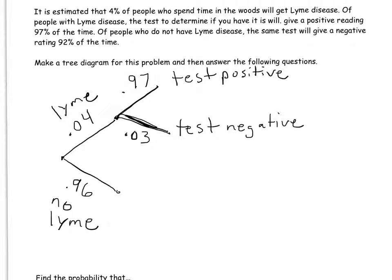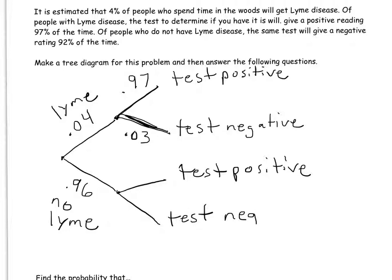Going down to the no-Lyme-disease branch, we split those people into test positive and test negative. So 92% of the time, if the person does not have Lyme disease, they're going to test negative — the test correctly identifies them as healthy. But 8% of the time we get a false positive, meaning the person really is healthy but the test is identifying them as sick with Lyme disease.